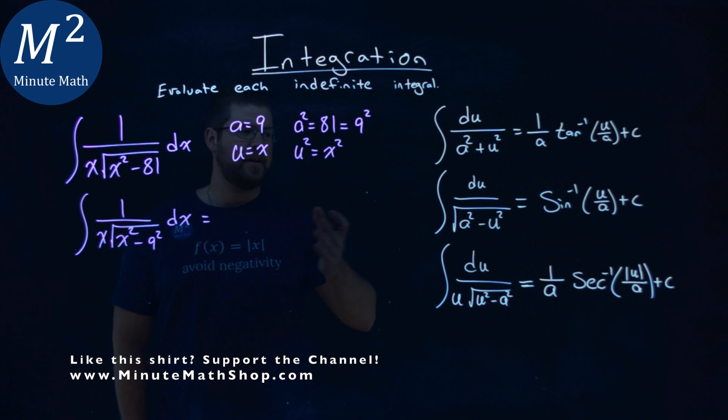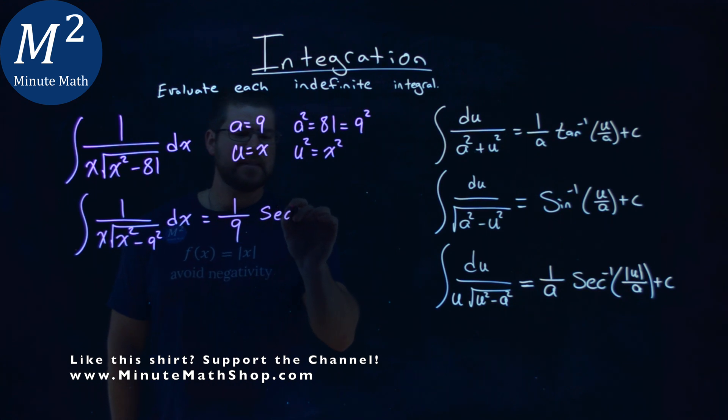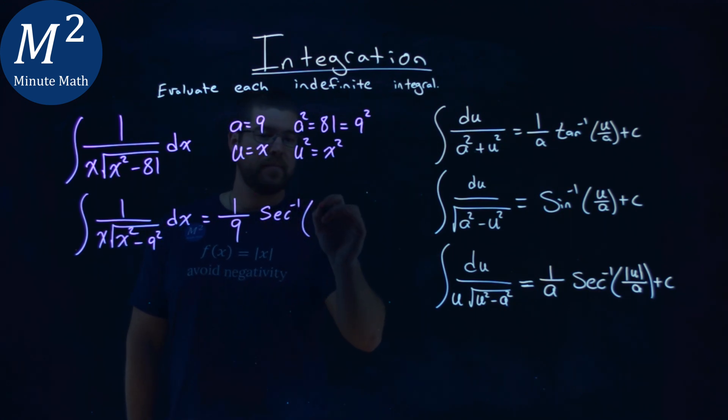And now from here, I can apply my definition. It tells us we have 1 over our a value, which is 9, times the arc secant of the absolute value of u, which is x here, over our a value, which is 9, plus c.